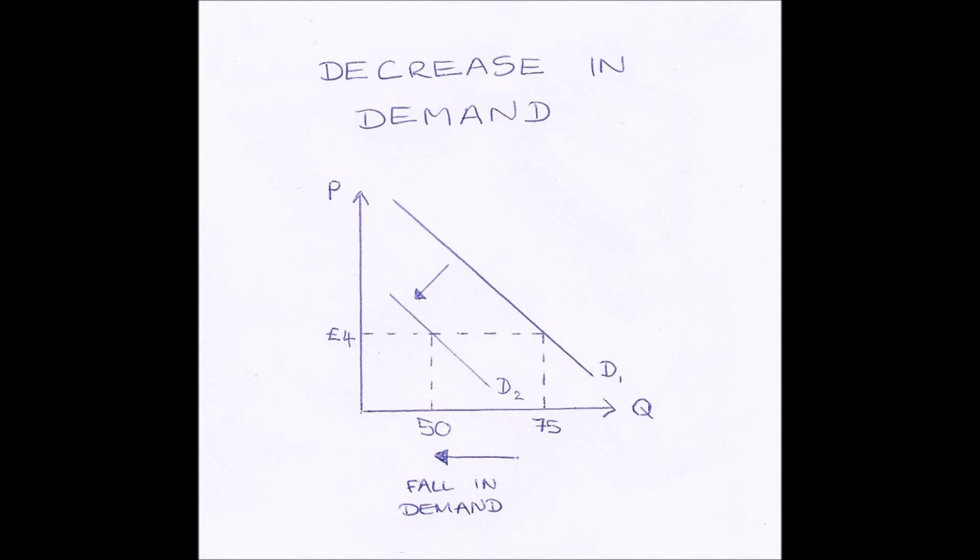And when any of these other factors that aren't price which affect demand change, there is a shift of the demand curve. And this picture here shows a decrease in demand. So say, for example, if a good were to go out of fashion, it isn't trendy to have anymore. Therefore people will stop buying it. So therefore its demand will decrease.